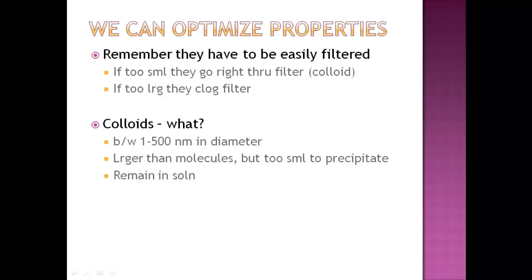We can optimize the properties, but before optimization, which includes crystal growth and nucleation, you've got to remember that the main thing is that these things have to be easily filtered. Because think about it, if they're too small, it's going to go straight through the filter and you're not going to have anything at the end to weigh. If they're too large, it's going to clog whatever filter you have that you're trying to use. There's a name that they put to things that are too small to be filtered. Those are called colloids.